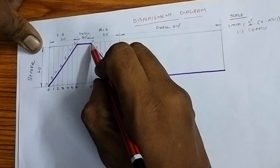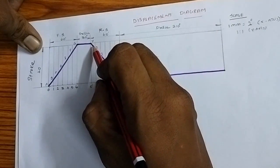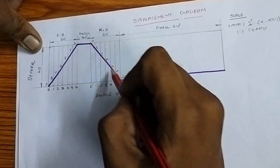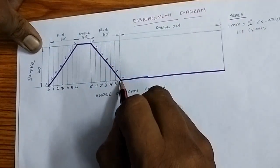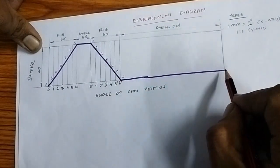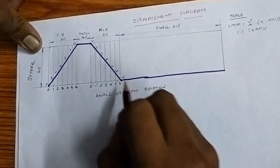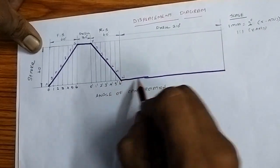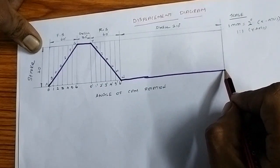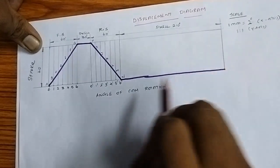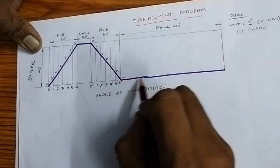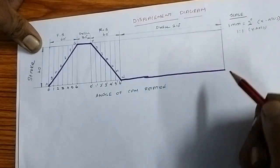For uniform velocity motion, connect the points with a straight line from start to end of the forward stroke. Connect the uniform velocity state line. From the dwell period, for the next 270 degrees there is no change in angular position, so connect with a horizontal state line.